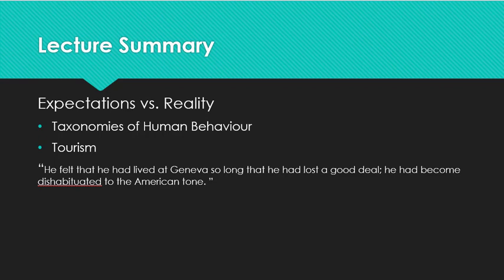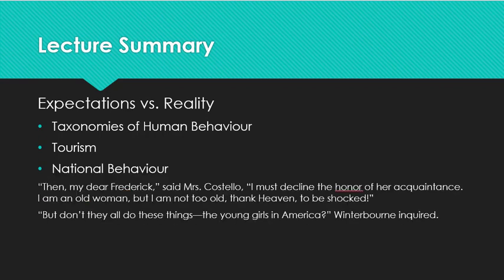Winterborn suggests repeatedly that he is unable to understand Daisy because she is an American, and as a man who has lived in Europe for many years, he doesn't know whether her behaviour is normal for American girls or shocking even in her own country. This introduces the idea of cultural relativism — the idea that what we consider moral or good and what we consider bad is culturally contingent. The same act might be moral in one country and immoral in others. Thus, morality ceases to be a black and white issue of good versus bad; instead, it's a murky grey area that leaves Winterborn unable to decide if Daisy has acted wrongly or not.